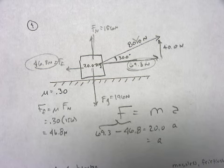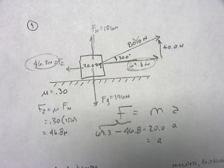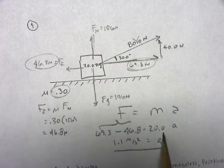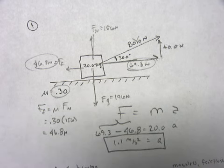69.3 minus 46.8, divide by 20. I get 1.13, or 1.1, because I can only have two significant figures. 1.1 meters per second squared.